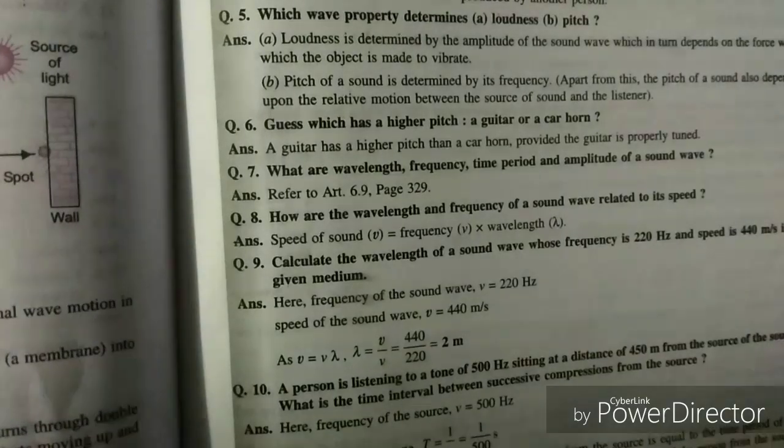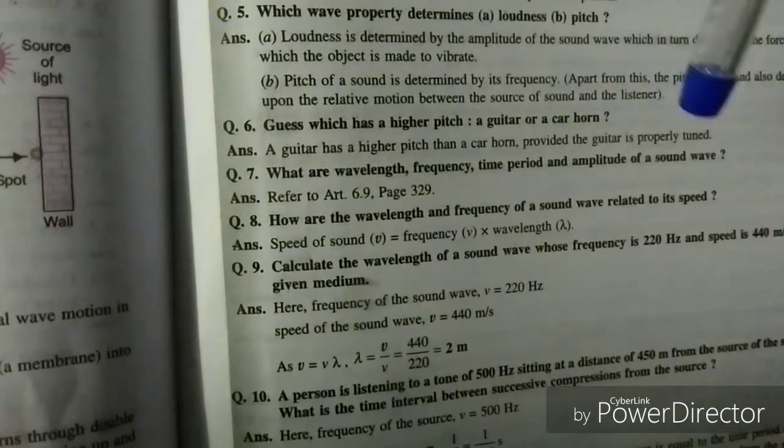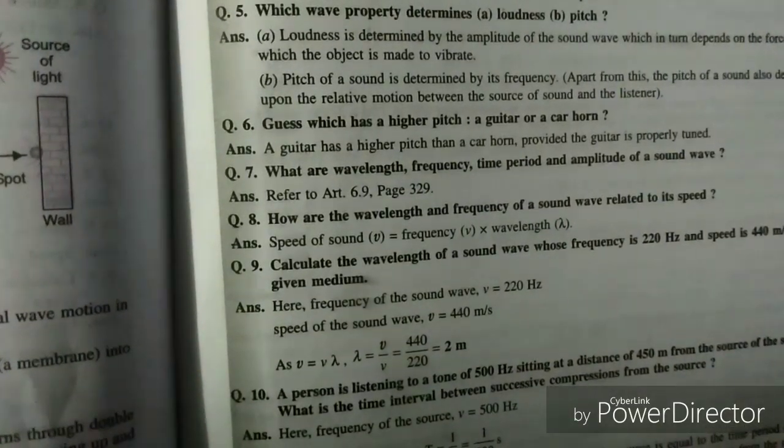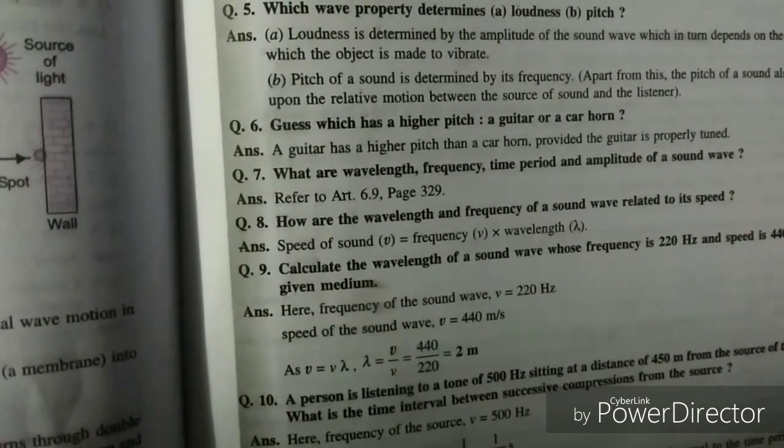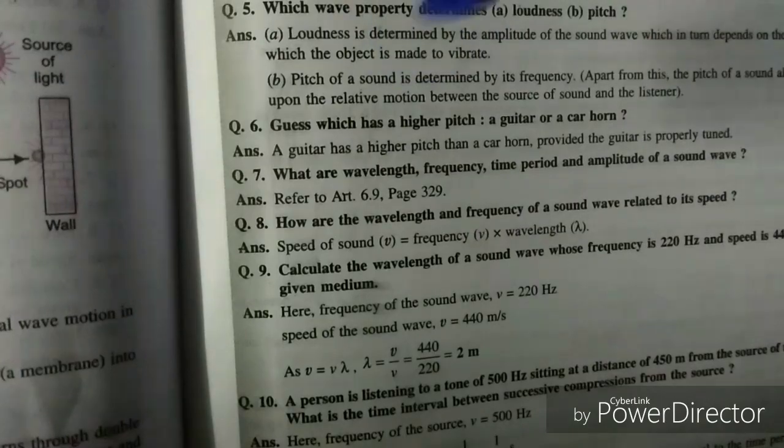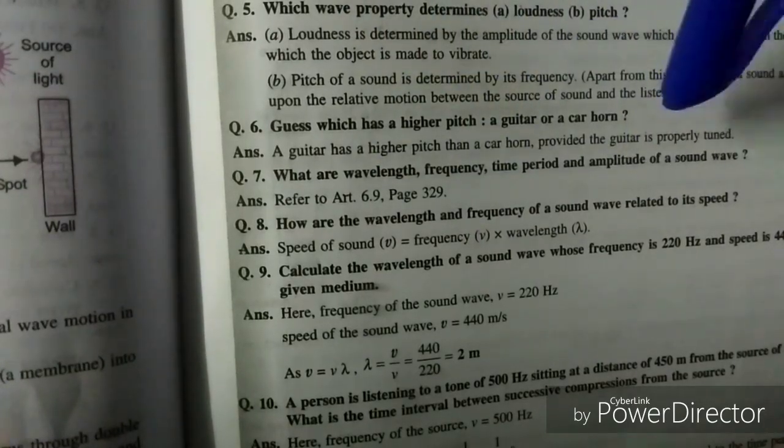So the next question is how are the wavelength and frequency of a sound wave related to its speed. Now it's a very important question. You can also be asked about the derivation. So speed of sound is equal to frequency into wavelength.